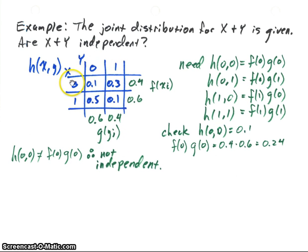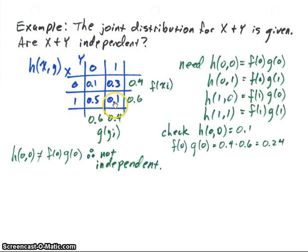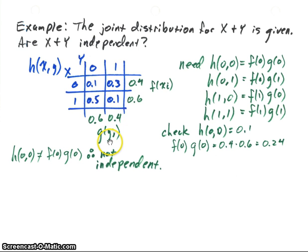Remember how we do that: for the function of X, we sum over the Y values. We have our two X values, 0 and 1, and so we're going to sum across the rows. For X equal to 0, we have 0.1 plus 0.3, which gives us 0.4. For X equal to 1, we have 0.5 and 0.1, so we get 0.6. That's our marginal distribution function for X. For Y, we sum the columns: 0.1 plus 0.5 equals 0.6, and 0.3 plus 0.1 equals 0.4.